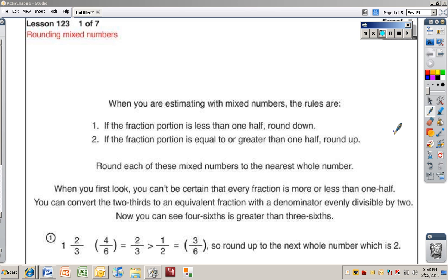When you are estimating with mixed numbers, the rules are, here are the rules. So we're going to round mixed numbers. If the fraction portion is less than one half, round down. If the fraction portion is equal to or greater than one half, round up.